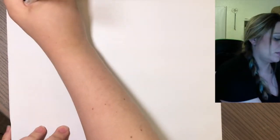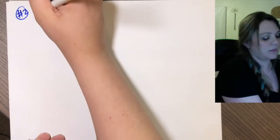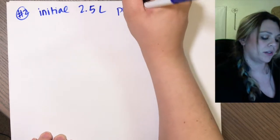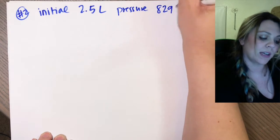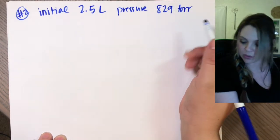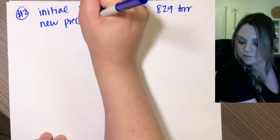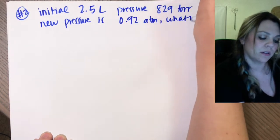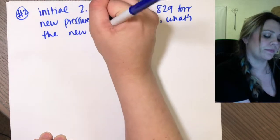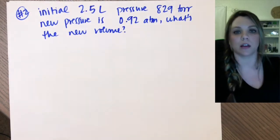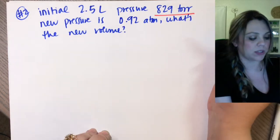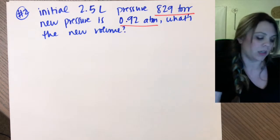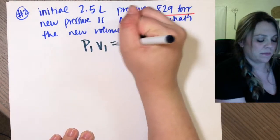The hard example. Question number two would be if my initial conditions in a 2.5 liter and a pressure of 829 torr, and the new pressure is now measured to be 0.92 atmospheres. What's the new volume? So right now, you actually cannot solve this because I'm given an initial pressure in torr and a final pressure in atmospheres. So all I have to do is convert. This is not the end of the world. It's going to be fine. P1V1 equals P2V2.